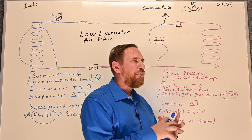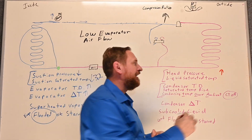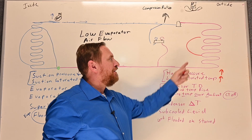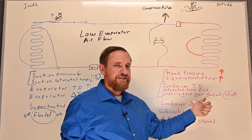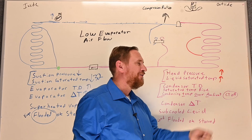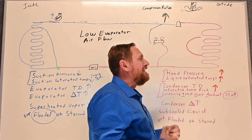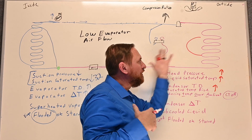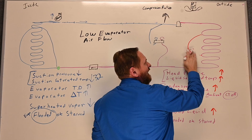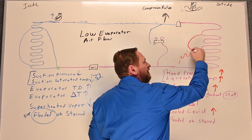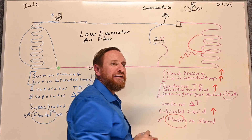Let's think about what more refrigerant is going to do to the system. More refrigerant means more molecules we're trying to compress, so head pressure is going to go up. As our head pressure goes up, our saturated temperature is tied with that, so the saturated temperature is going to be a much higher temperature. We now have a higher temperature between the refrigerant condensing and the air temperature, so our condenser TD — also called the saturated temperature rise, condensing temperature over ambient, or CTOA — all of that's going to go up as well. We also end up putting more liquid in the condenser, so subcooling goes up, and I end up flooding or overfilling with liquid refrigerant inside my condenser.